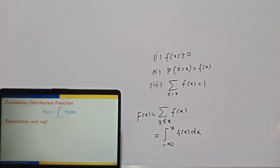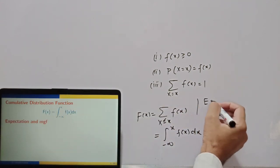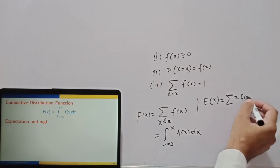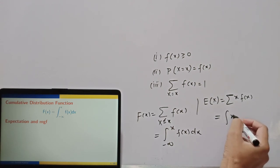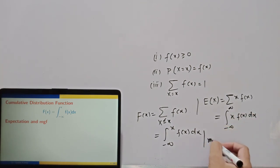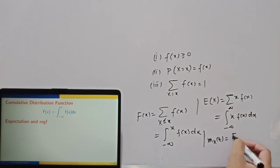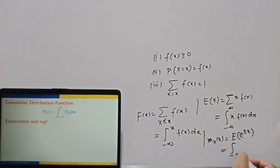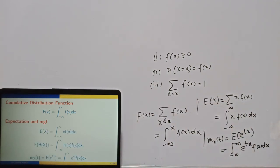For expectation: in the discrete case, the expectation of x is given by the summation of x·f(x). In the continuous case, it becomes the integral of x·f(x) dx. The moment generating function in the discrete case is the expectation of e^(tx), solved by summation; in the continuous case it is the integral from minus infinity to infinity of e^(tx)·f(x) dx.